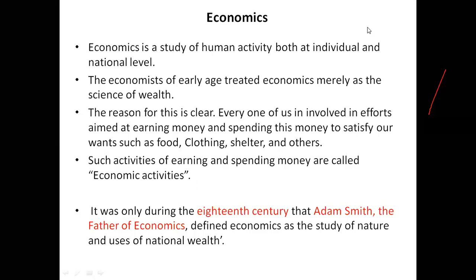For example, on your bike's speedometer, you can see the word 'economy.' If you drive your bike in the speed range of 30 to 50 km/h, you get more mileage — this is called an economy drive. In an economy drive, you are saving petrol and automatically saving money. So economy means managing resources efficiently.